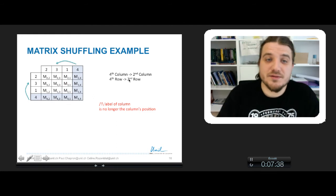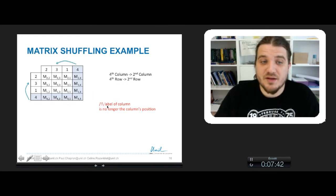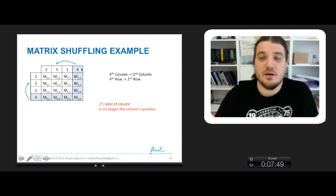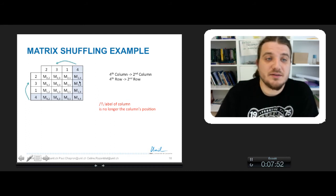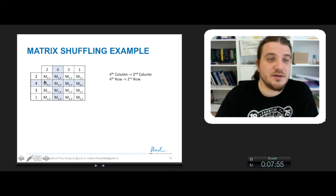Another example with the 4th column and the 2nd column, and the 4th row and the 2nd row. Be careful that the label of columns is no longer the column's position, so it's just a label: 2, 3, 1, 4. And so if we want to take the column and put it here, and the row and put it here, it will produce this matrix.